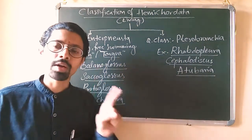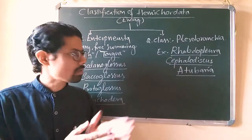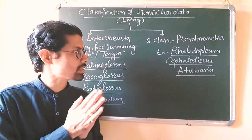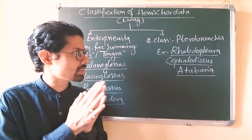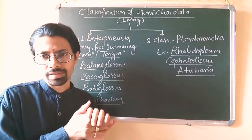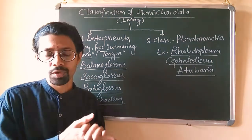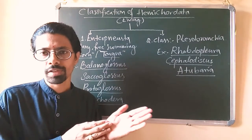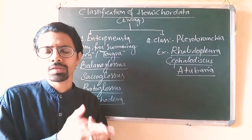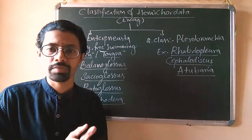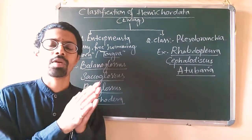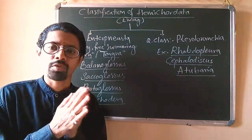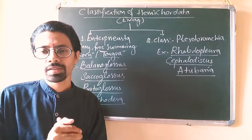Examples I have written already here: Rhabdopleura, Cephalodiscus, and Atubaria. These are some of the examples we can quote for it. Again, they are subdivided into orders, different orders. Orders we are not much in detail to be discussed here in this particular video.